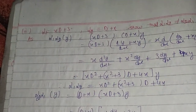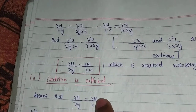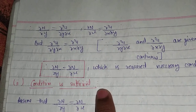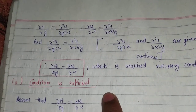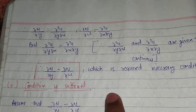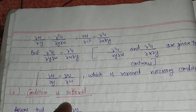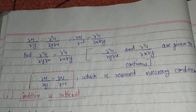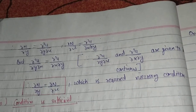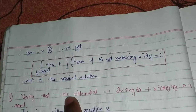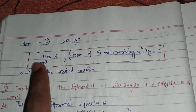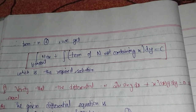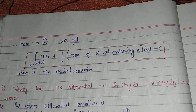To summarize: the necessary condition for any equation to check exactness is ∂M/∂y = ∂N/∂x. First, this condition is checked. If the equation is exact, the solution is found using: integration treating y as a constant of M dx, plus integration of the terms of N not containing x, with respect to dy, equals C.